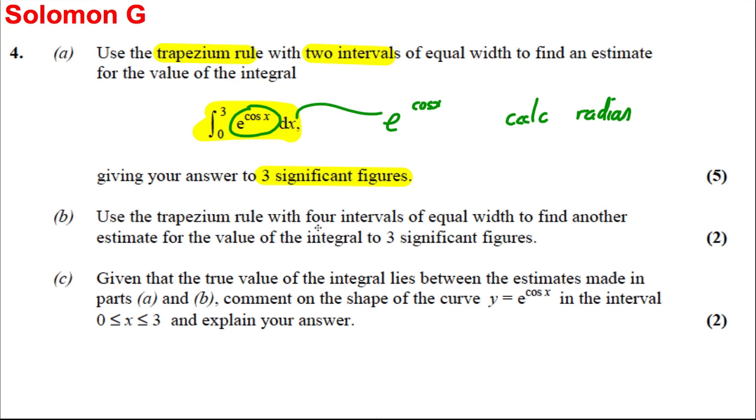Then it asks us to use the trapezium rule with four intervals to find the value of the integral to three significant figures. And then it says, given that the true value of the integral lies between the estimates made in part A and part B, comment on the shape of the curve between zero and three, these points. Explain your answer.